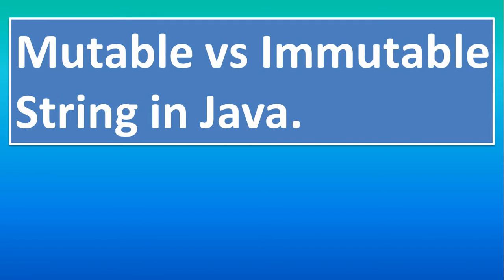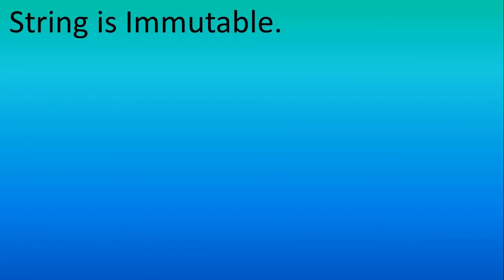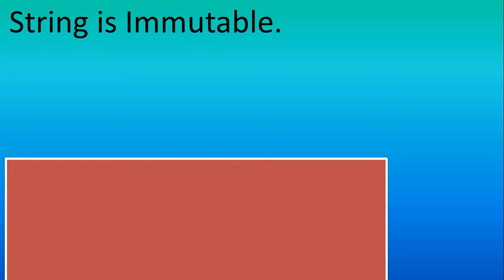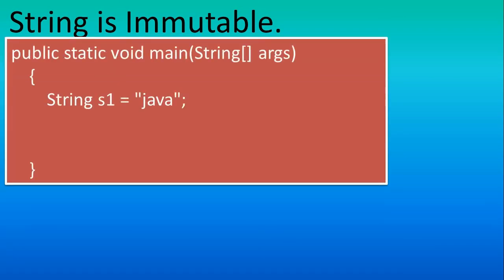We start with today's tutorial. String is immutable by default in Java — whatever string you declare is immutable. Immutable means the string cannot be changed. For example, if we have a string whose value is 'Java', that string value will not be changed.